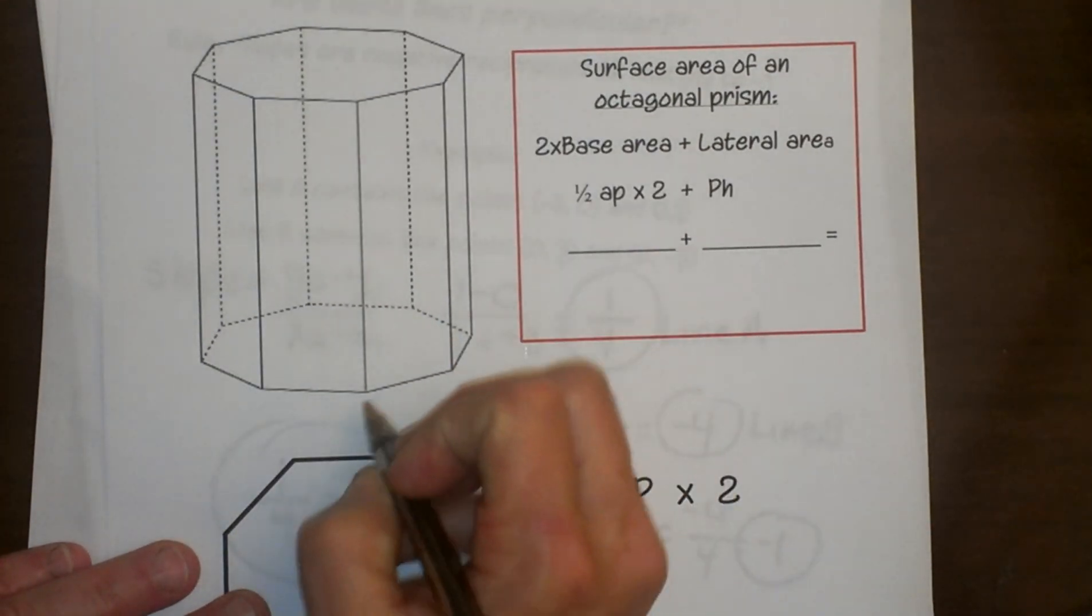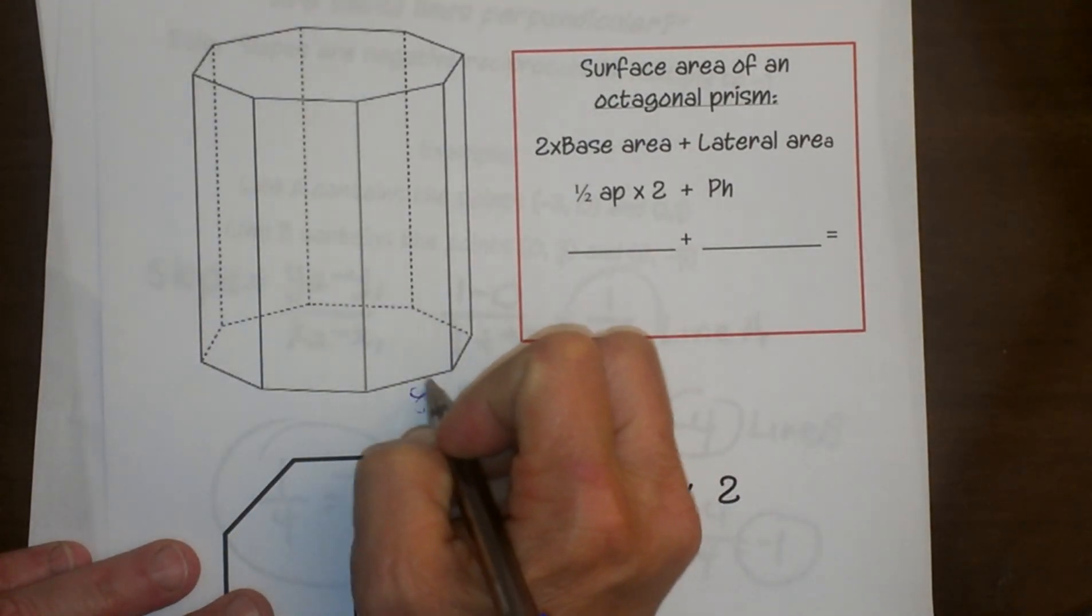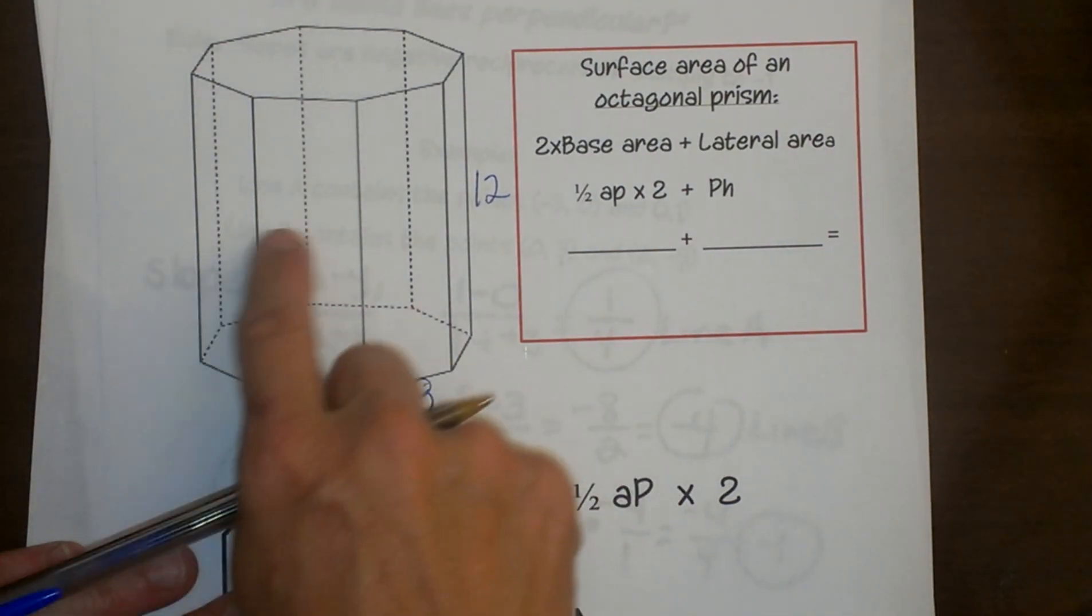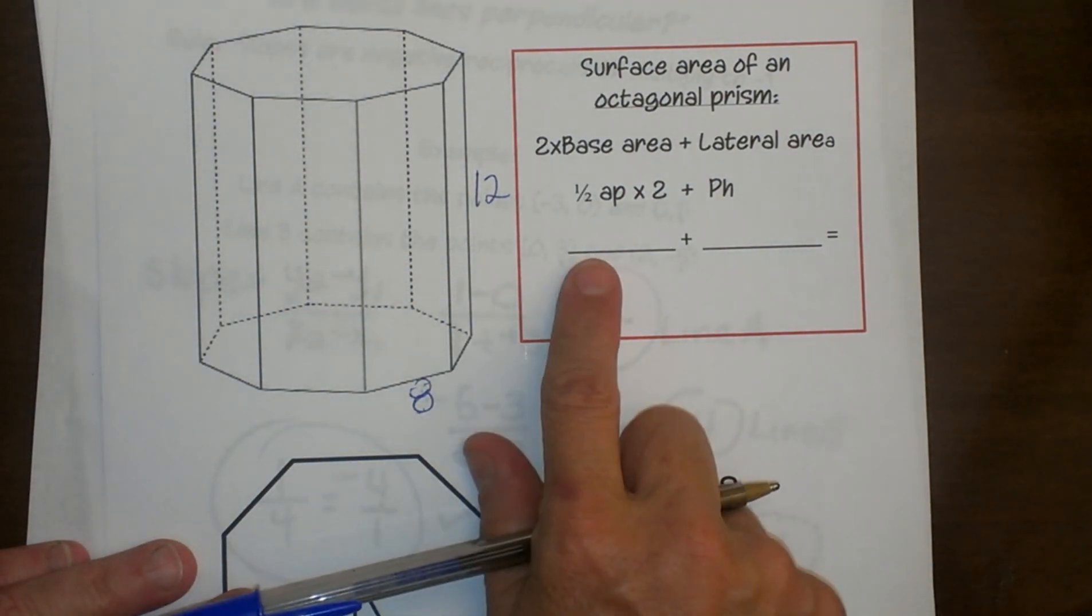Let me give you some measurements. We're going to say the side is 8 and the height is 12. We know that it's regular, meaning all the sides are the same length. Now what do we do with that?